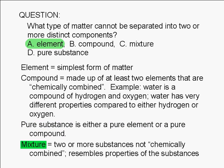A mixture consists of two or more substances which are not chemically combined. By this, we mean that the mixture tends to resemble the properties of the substances that make up the mixture.